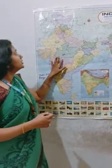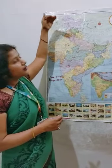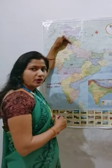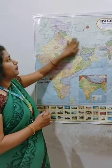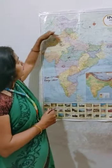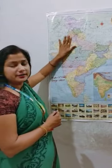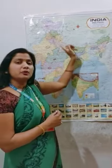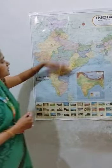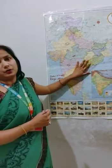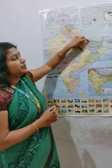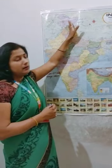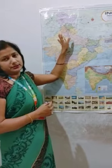Now I want to tell you about the location of the northern plain area. In the north, the Himalayas form the border. In the west, there is the Thar desert. In the east, there is the Purvanchal range. And in the south, there is the southern plateau. So our plain area is surrounded by the Himalayas, the Purvanchal range, the plateau, and the Thar desert.